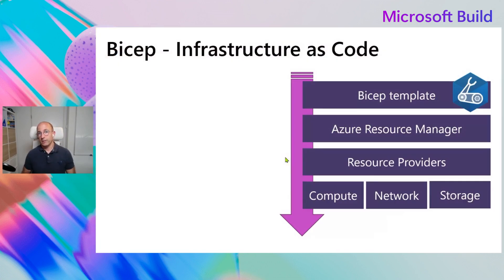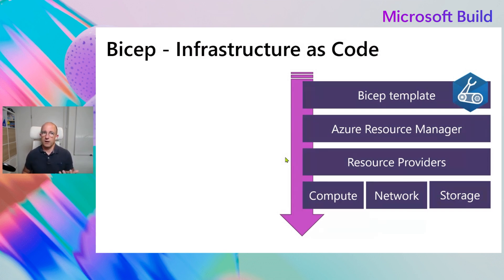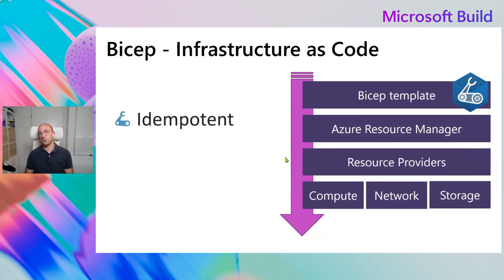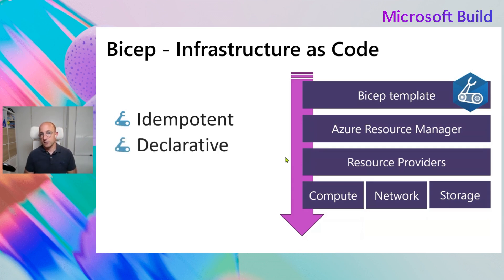To get everyone on the same page, Bicep is an infrastructure as code language. It allows you to deploy resources into Azure using a declarative approach. There are three important aspects when you take a look at Bicep as infrastructure as code. One is that it's idempotent — similar to how the same source code always generates the same binary, the same template will always generate the same environment in Azure, so it's consistent. Second, it is declarative.